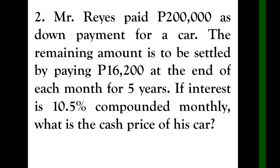Now, another problem. Mr. Reyes paid 200,000 as down payment for a car. He paid 200,000 as down payment because he bought a car. The remaining amount is to be settled by paying 16,200 at the end of each month for 5 years. So for 5 years, the remaining amount he'll pay for the car is 16,200 every month for 5 years.